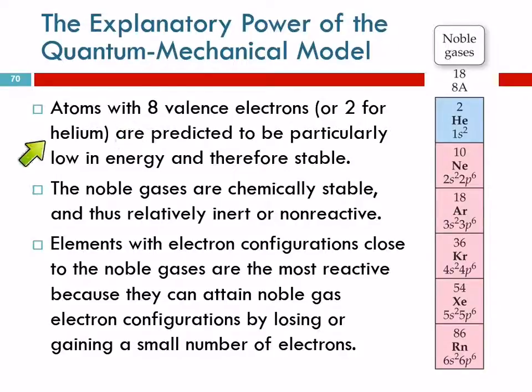Atoms with eight valence electrons, or two for helium, are extra special. They're more stable. They're lower in energy.